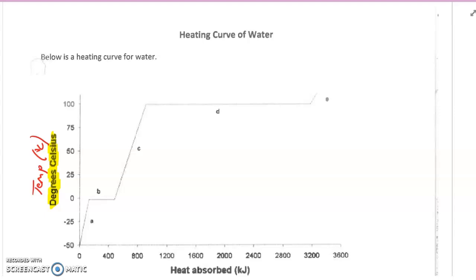Now, the first part of the graph starts off, and the letter A is this first sloped line. This represents the solid state of matter, so this would be ice in the case of water. Ice can get below zero degrees Celsius, and our graph goes down to a possible negative 50, and this shows us the possible temperature range that ice can be at.